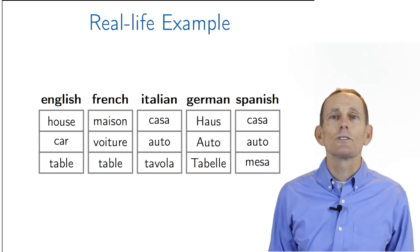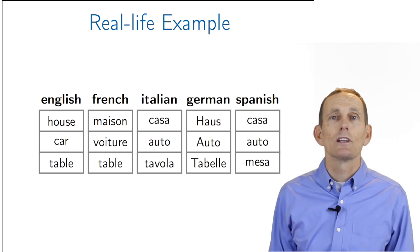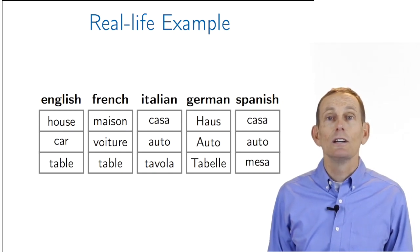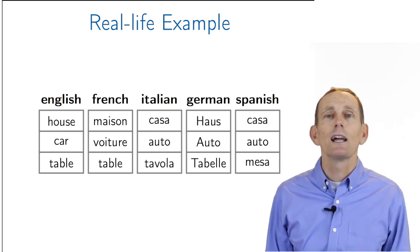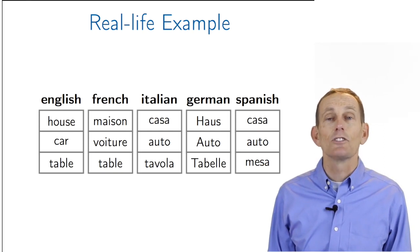The program would take the user's input word along with from and to languages. Then it'd search through the corresponding from array, English for example, if trying to translate car from English to Spanish. If it found a match, it'd return the element at the same index location in the target language.